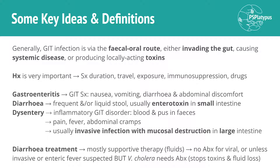Alright, so just some brief definitions. Gastroenteritis generally presents with these key GIT symptoms: nausea, vomiting, diarrhea, and discomfort in the abdomen. Gastroenteritis — 'gastro' means stomach, and 'entero' relates to the intestines, but here we're really talking about the intestines — and it is infection or inflammation, but here we're talking about infection.